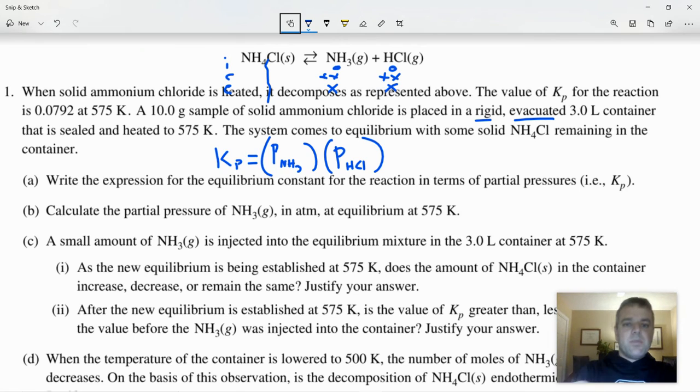If we plug in those values plus our value of KP into the expression, we get that 0.0792 equals X times X, also known as X squared. So X equals the square root of 0.0792, which is 0.281, which would be the partial pressure of each of those.